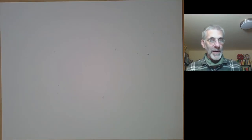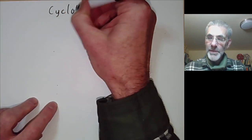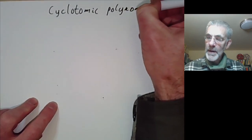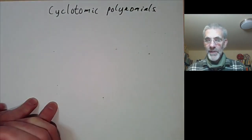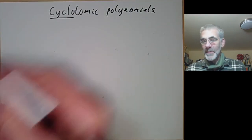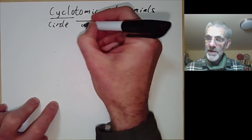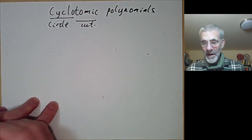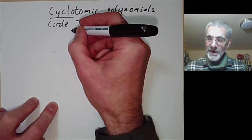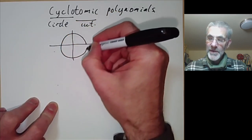This lecture is part of an online course on Galois theory and will be about cyclotomic polynomials. So let's first explain what they are. First of all we need to know what cyclotomic means. Cyclo just means circle and tomic means cut. So they're polynomials where you cut up a circle, and the circle you cut up is the unit circle in the complex numbers.